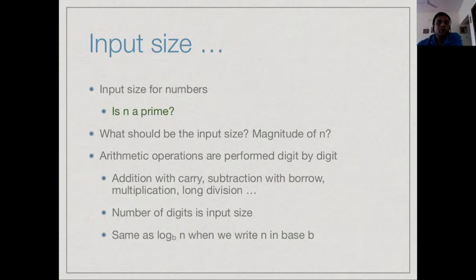There is an important class of problems involving numbers where we must be careful about input size. Suppose we write an algorithm for primality checking. How should we think of the size of the input? For instance, 5003 is roughly 10 times 500. Would we expect the time to grow proportional to 10? Should the magnitude of n be taken as the input size?